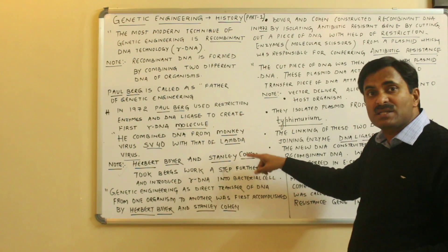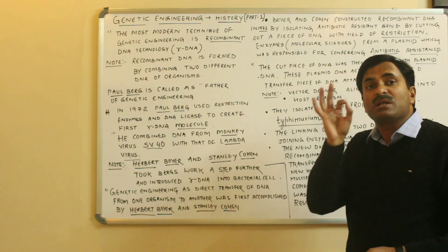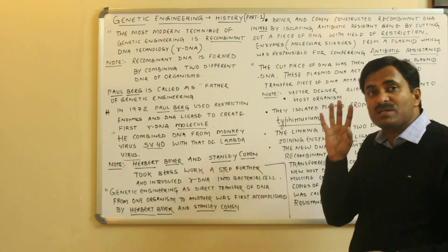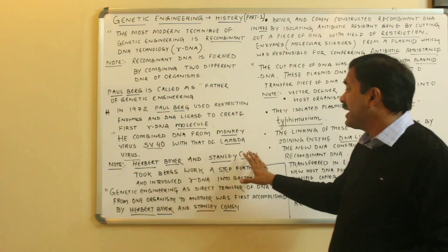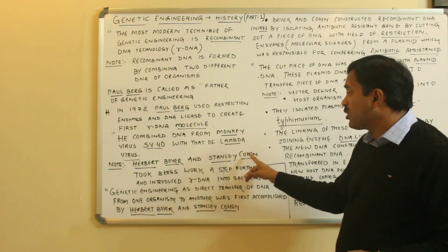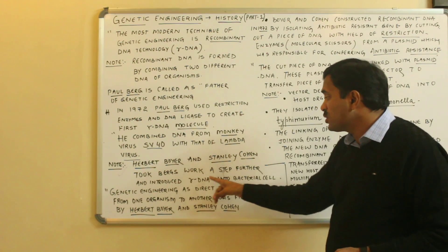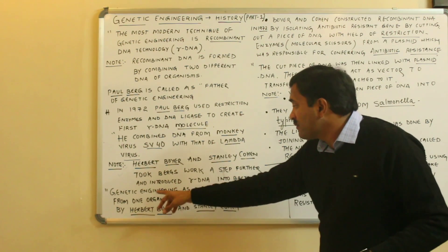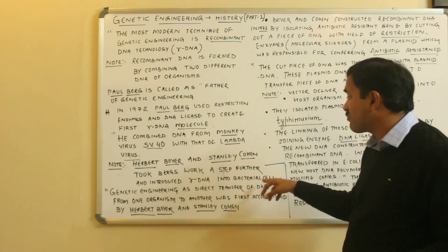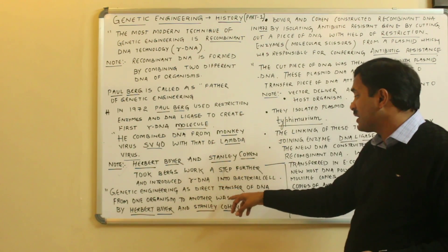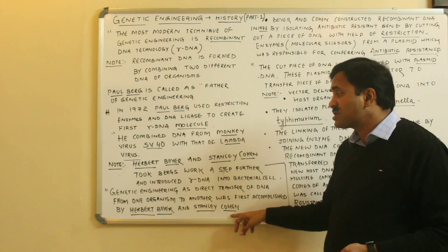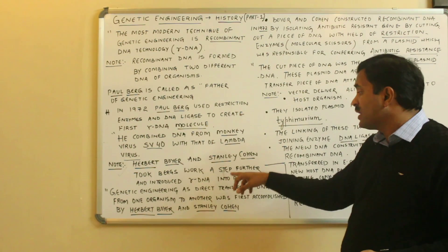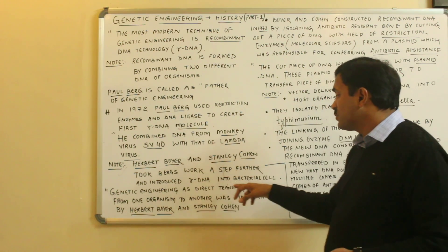In NCERT, it is written that the first recombinant DNA was constructed by Herbert Boyer and Stanley Cohen. Boyer and Cohen took Berg's work a step further and introduced recombinant DNA into a bacterial cell. Genetic engineering as direct transfer of DNA from one organism to another was first accomplished by Herbert Boyer and Stanley Cohen.